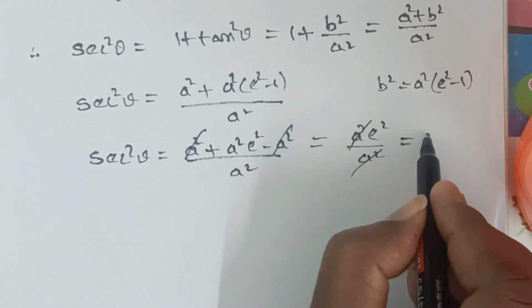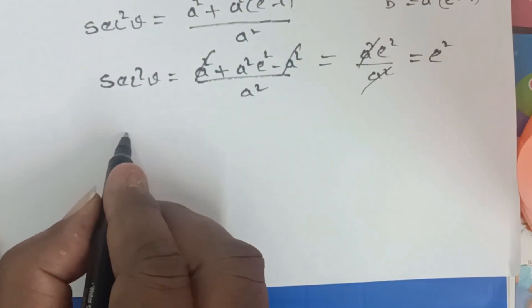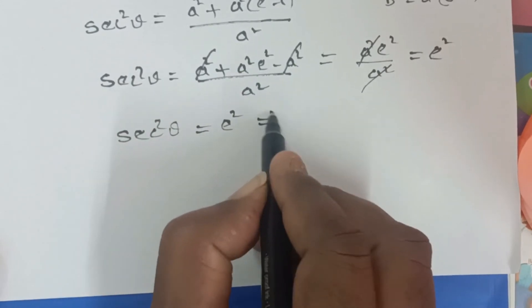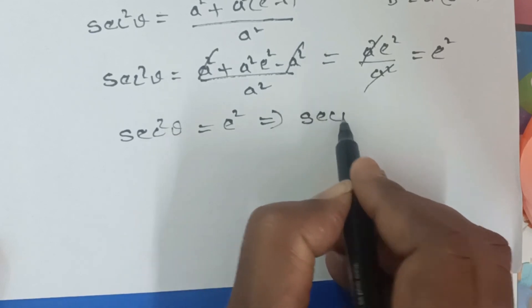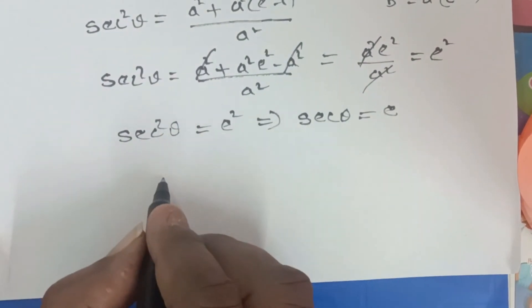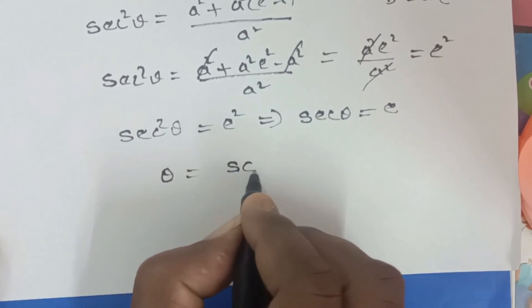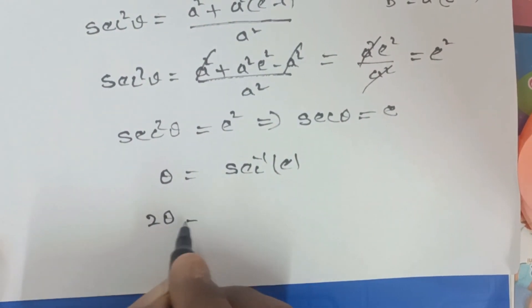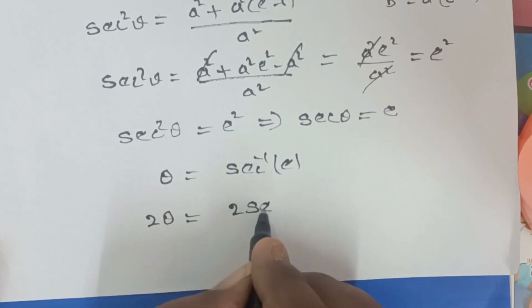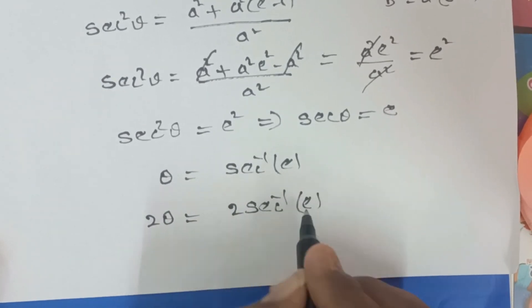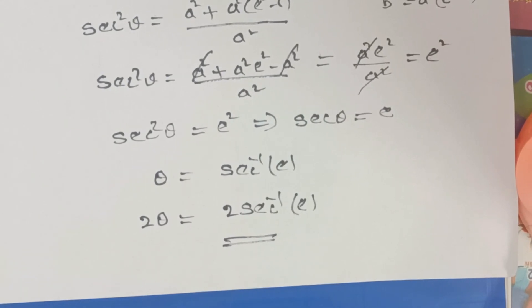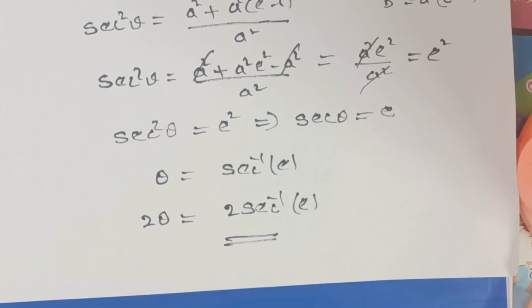So sec²θ = a²e²/a² = e², which means sec²θ = e². This implies sec θ = e, so θ = sec⁻¹(e). Therefore the angle between the two asymptotes is 2θ = 2 sec⁻¹(e). So the angle between the two asymptotes is 2 tan⁻¹(b/a) = 2 sec⁻¹(e).